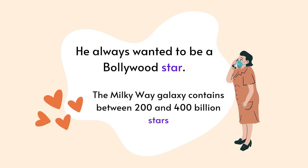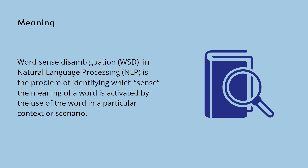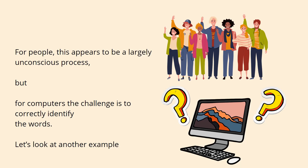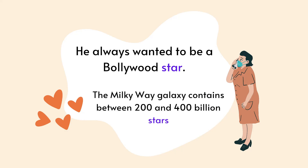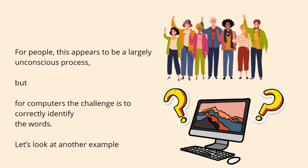Let's take two example sentences. 'You always wanted to be a Bollywood star.' 'The Milky Way galaxy contains between 200 to 400 billion stars.' Word sense disambiguation is the problem of identifying which sense — the meaning of a word — is activated by the use of the word in a particular context or scenario. For people like us, this appears to be a largely unconscious process, because we know what a Bollywood star is and we also know that a Milky Way galaxy contains 200 to 400 billion stars. But for the computer, the challenge is to correctly identify the words.